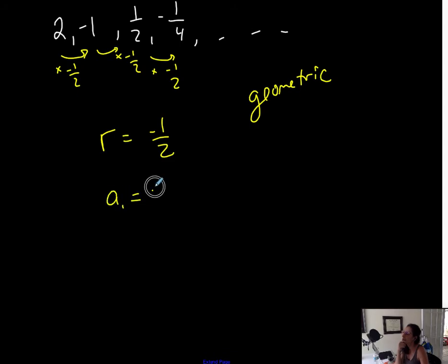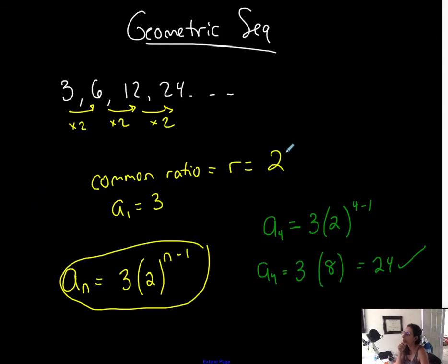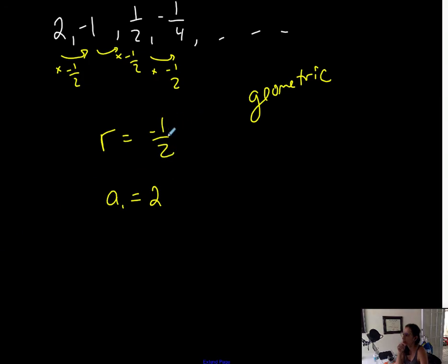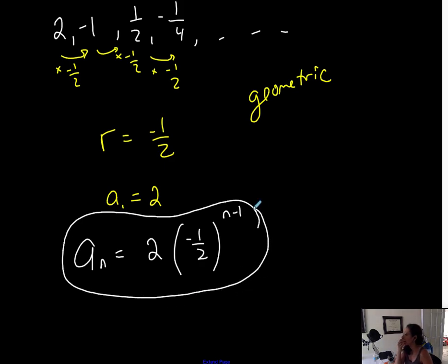And then the first term is 2. Notice that the common ratio doesn't have to be a whole number. It could also be a fraction. So if you're dividing by a same number, remember that you also have to represent it by whatever you multiply. So technically I'm dividing by negative 2, but that's the same thing as multiplying by negative 1/2. And the common ratio is whatever number you're multiplying each term by to get to the next one. So the nth term of this geometric sequence is the first term times the common ratio raised to the n minus 1. So they're not hard, right? The arithmetic and geometric sequence.